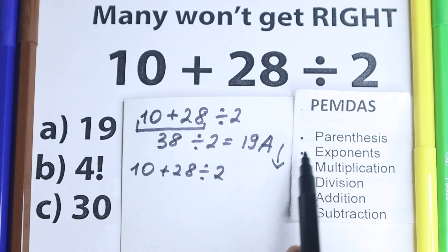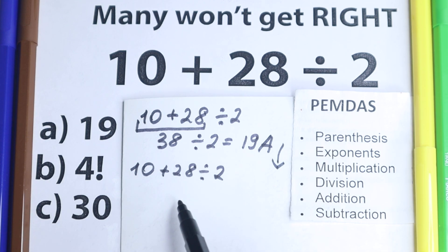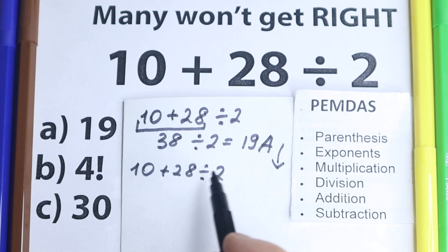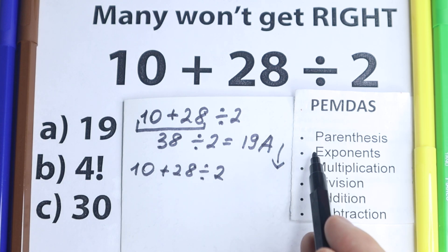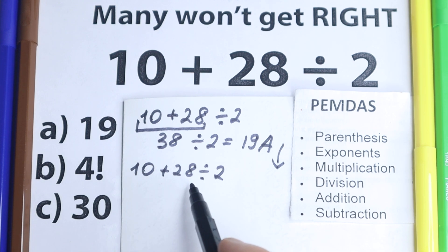The first step of PEMDAS is parentheses. And now we need to scan. Are there any parentheses right here? No, I don't see any of those. So let's go to the next step. What about exponents? Are there any exponents right here? No, I don't see any of those. Let's go to the next step.